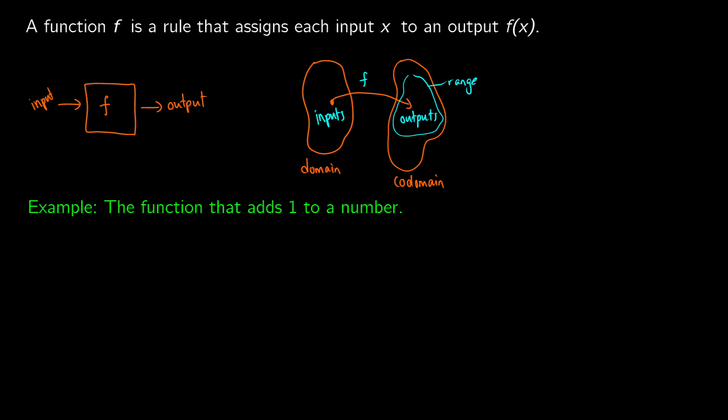But let's see an example of a function that adds one to a number. So if we think about our little machine here, what would happen if we put in one into our function machine, we add one to it, so we get two out. If we have a number like three, we stick it into our function machine, and what comes out would be four.